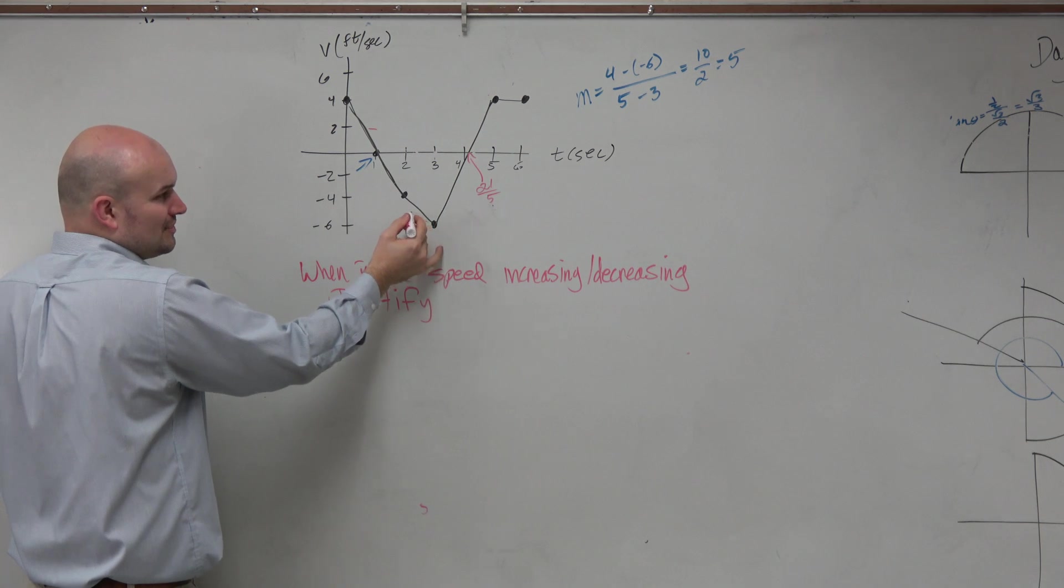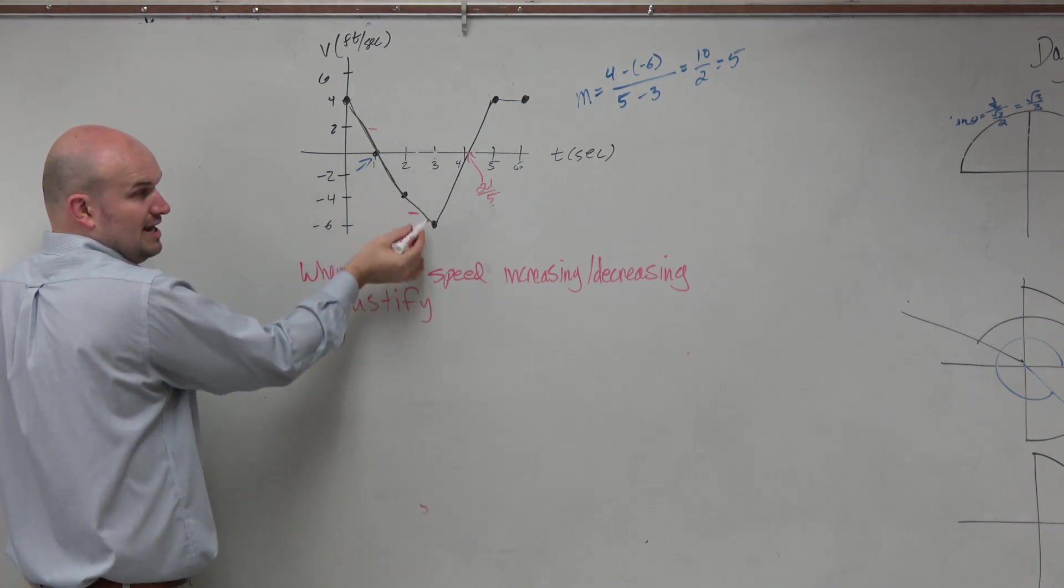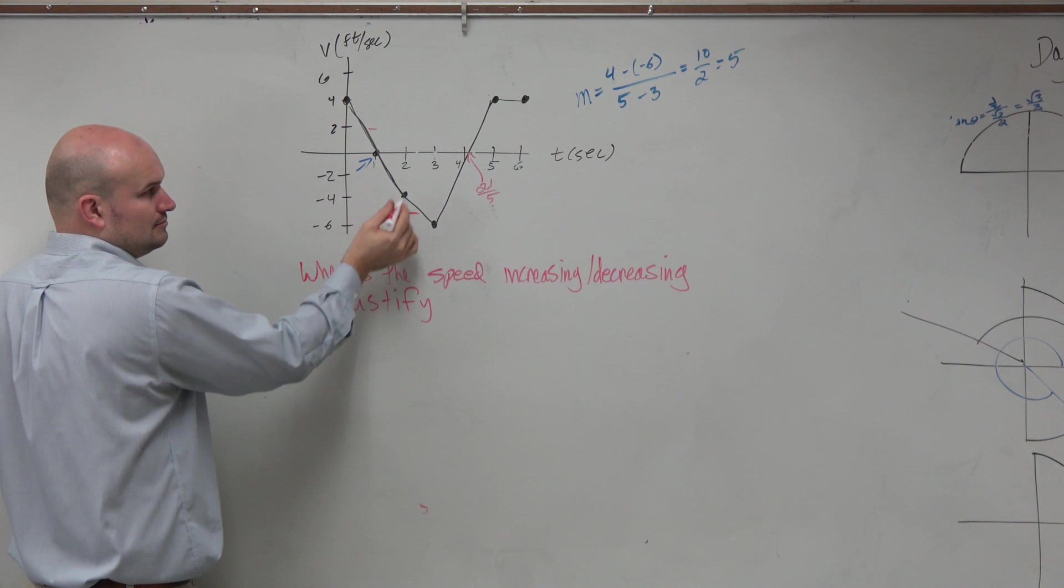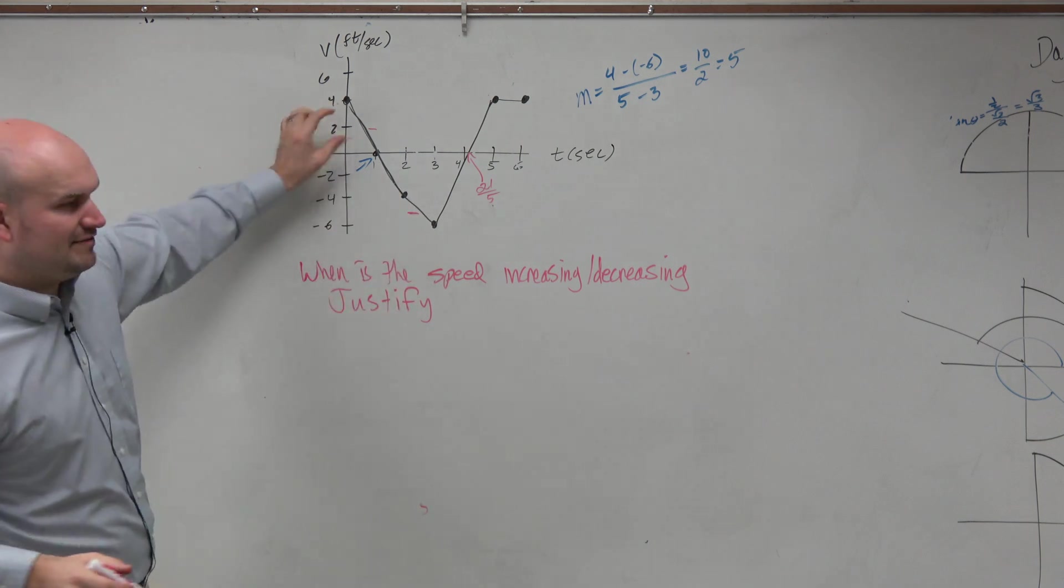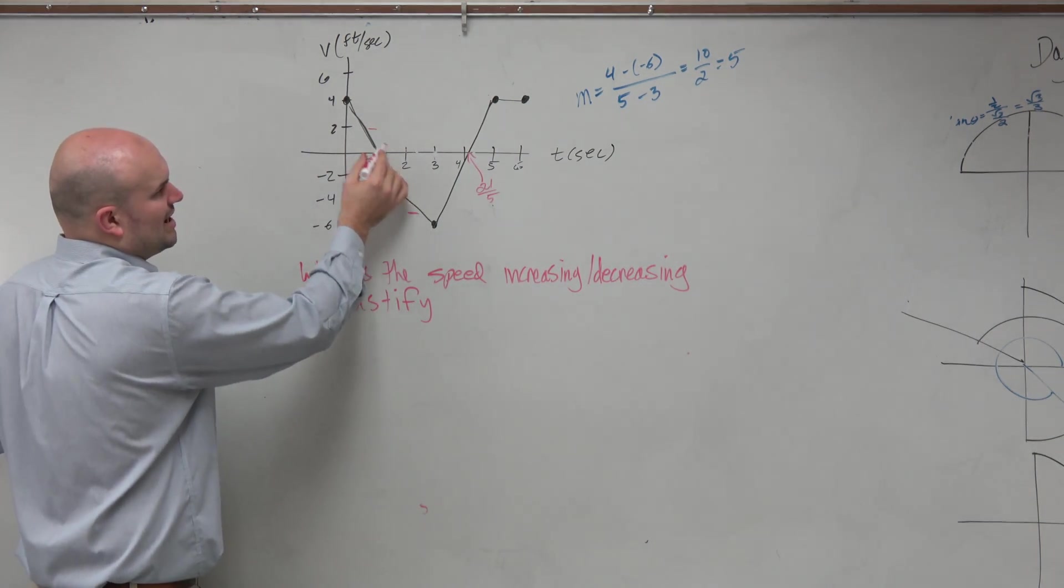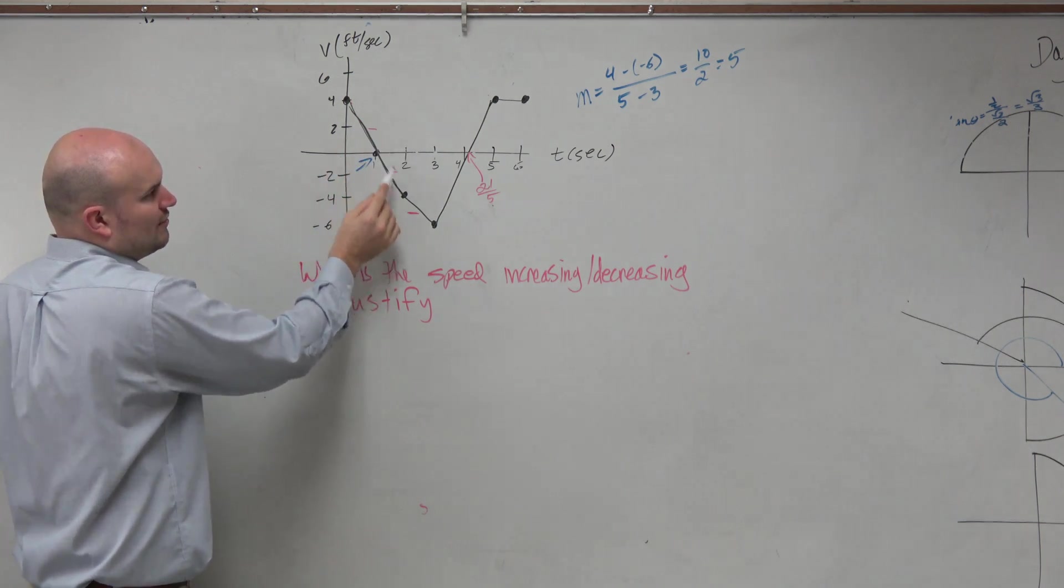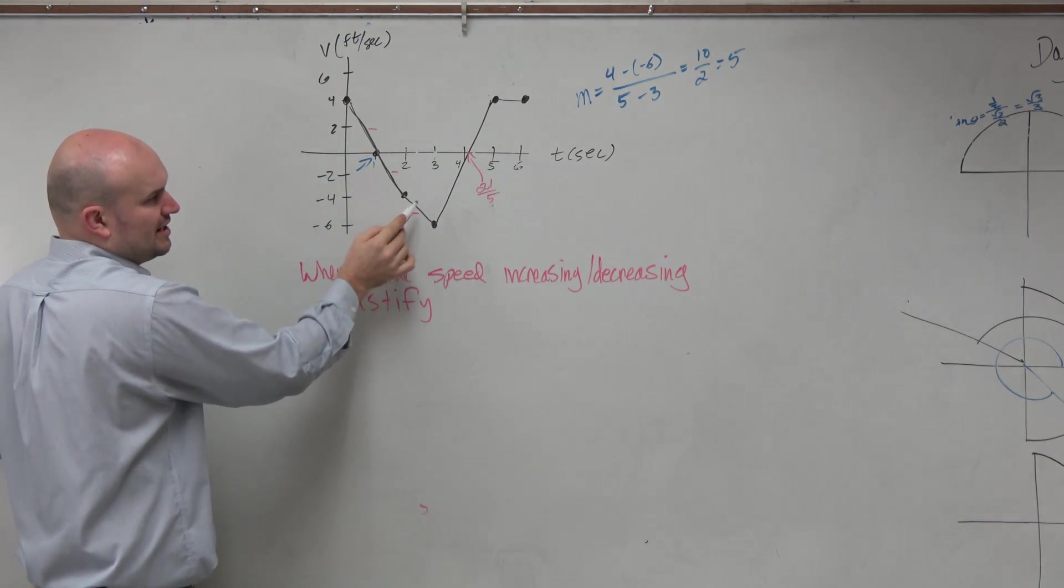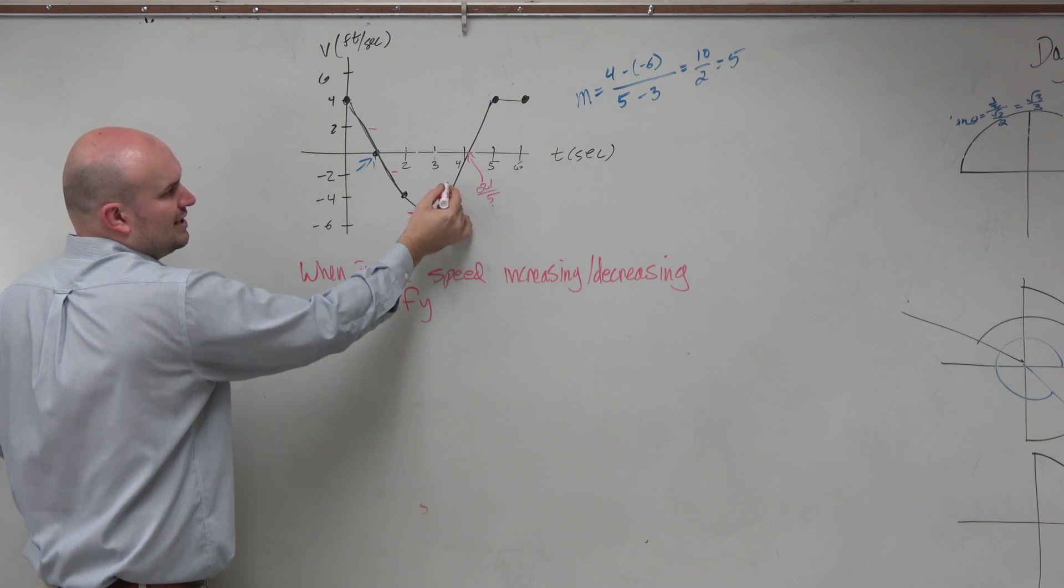Notice though how it's a different slope. That's kind of important. So actually what I'm going to do is I'm going to do kind of every interval here. So we have from 0 to 1 negative, from 1 to 2 it's negative, from 2 to 3 it's negative, from 3 to 4 it's positive.